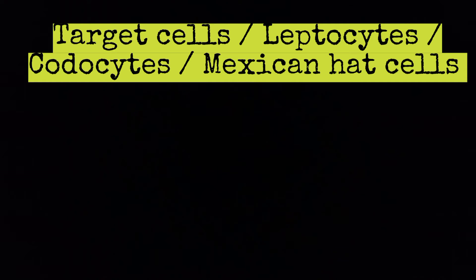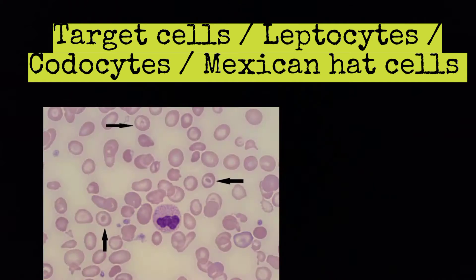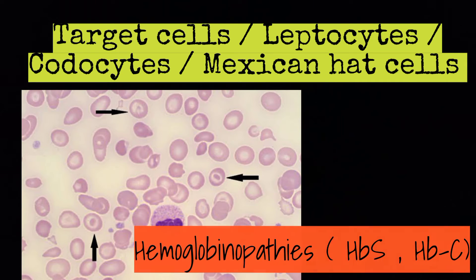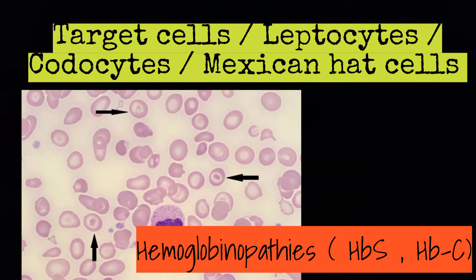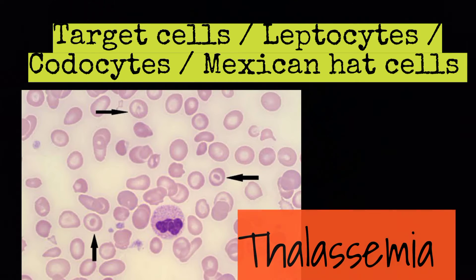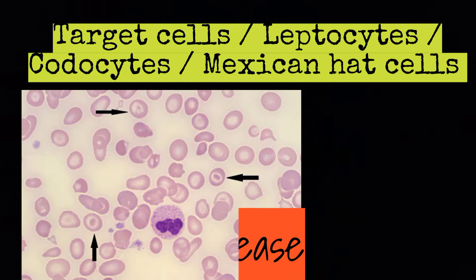Second, target cells, also known as leptocytes, codocytes, or Mexican hat cells. Examples: hemoglobinopathies — HbS, HbC — iron deficiency anemia, thalassemia, and liver disease.